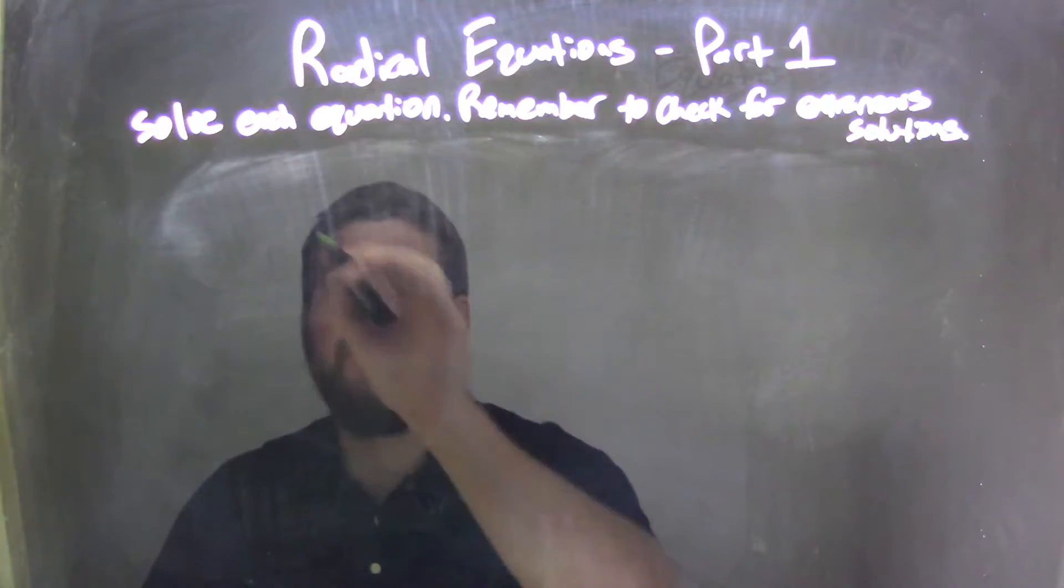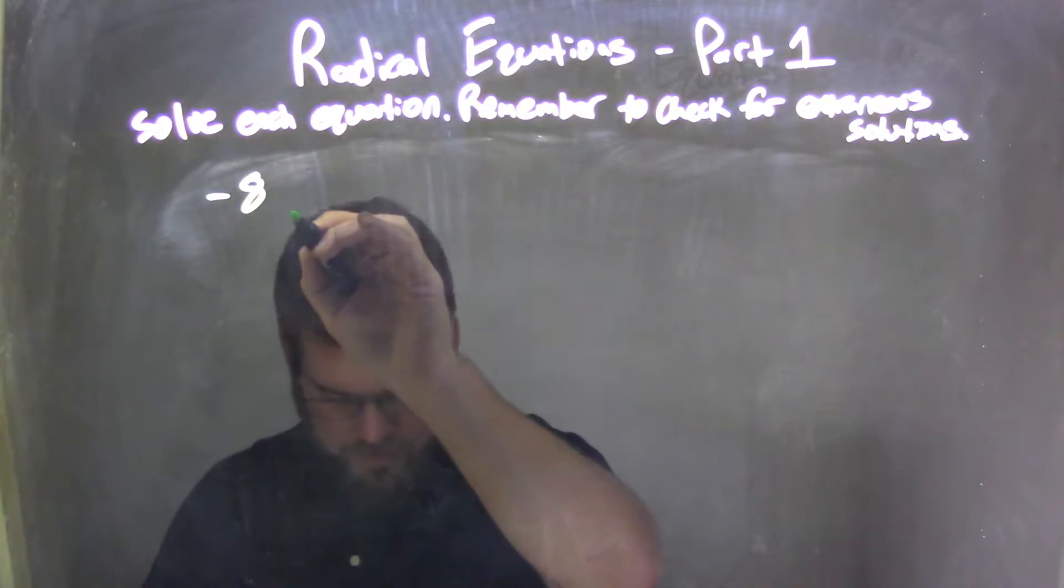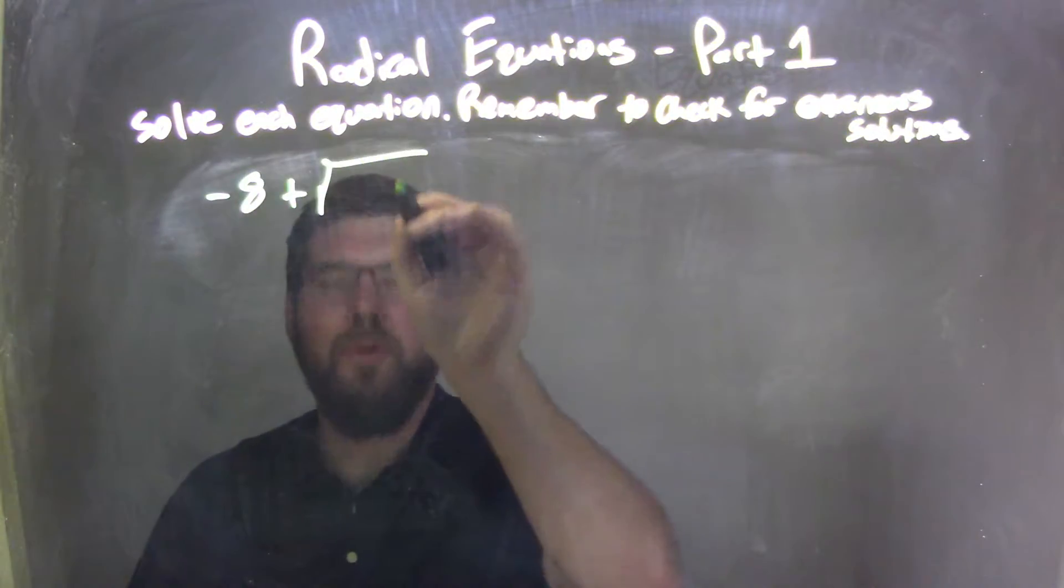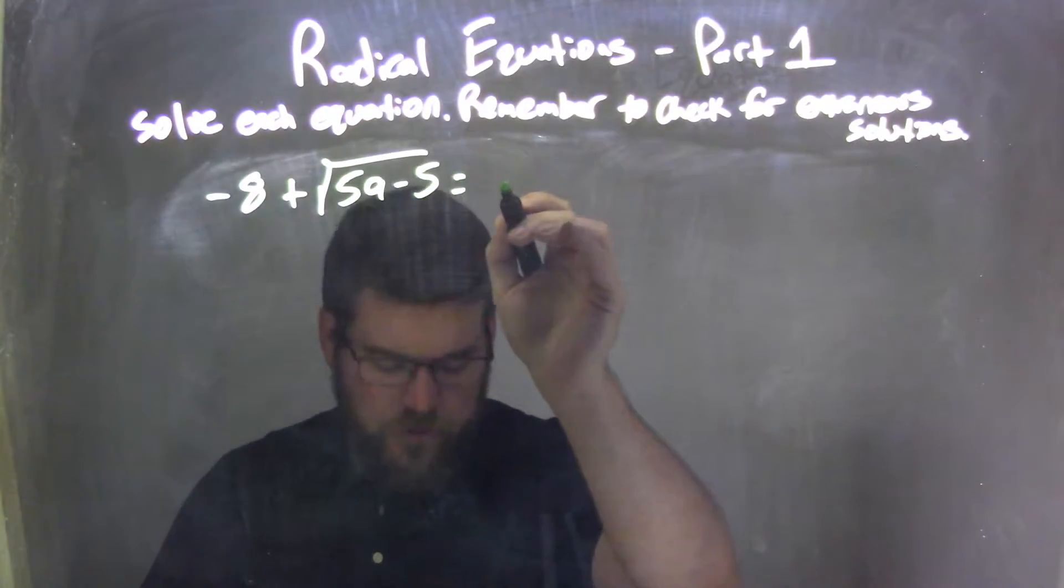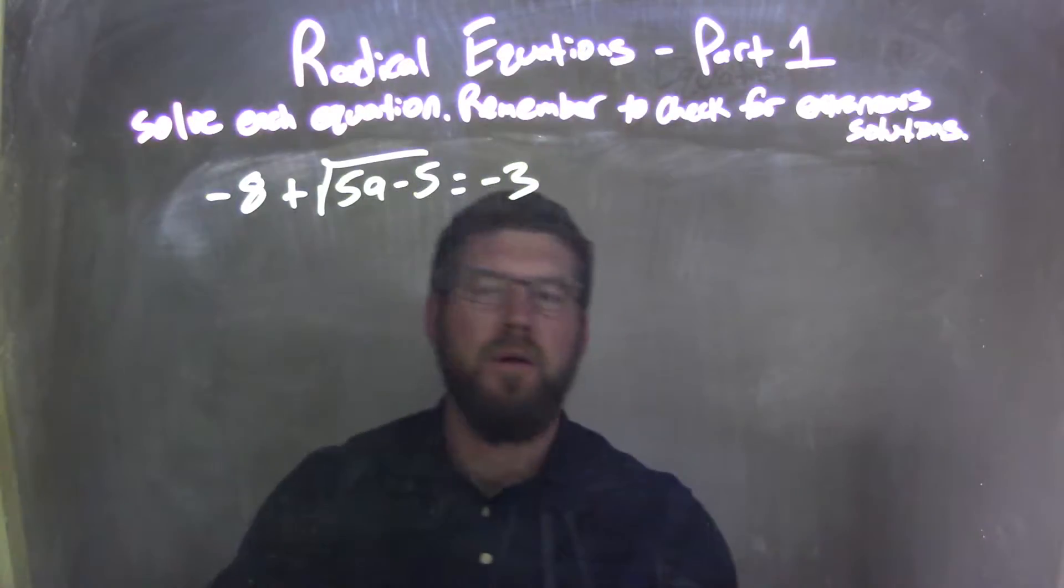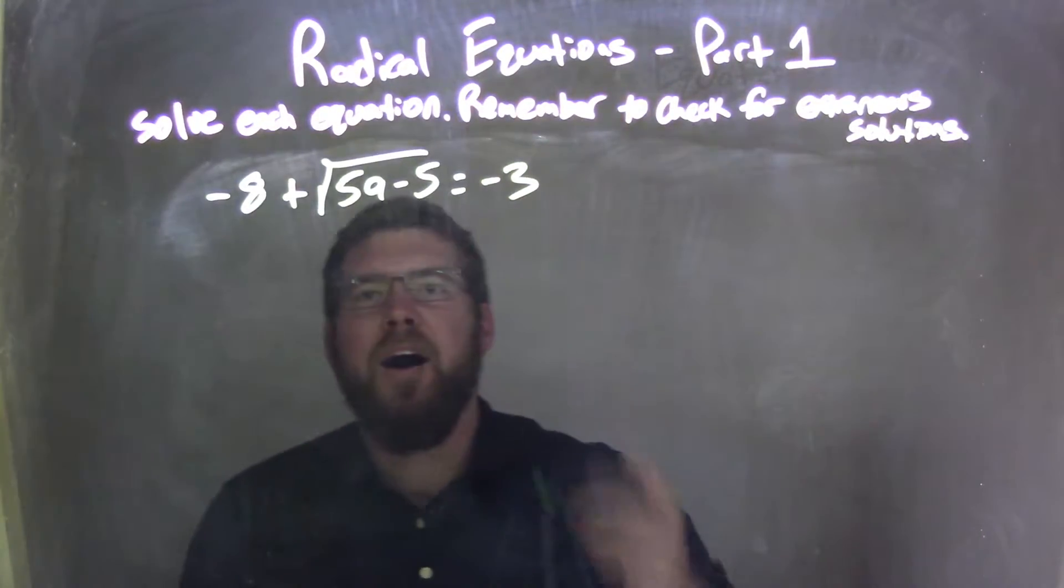If I was given this equation: negative 8 plus the square root of 5a minus 5 equals negative 3. I want to get a by itself.